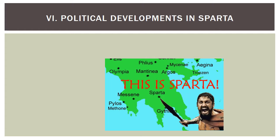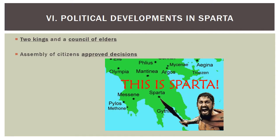In Sparta, located on the mainland of Greece, there were two kings who worked together alongside a council of elders — together this made an aristocracy. If you've seen the movie '300,' this might be familiar to you.